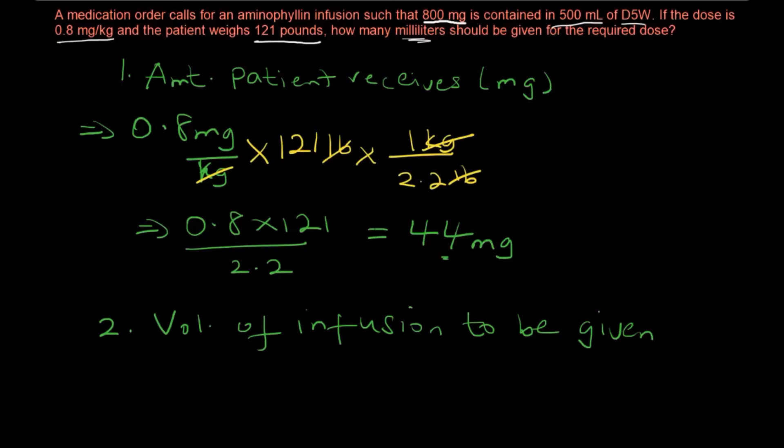The way we do that is to make use of the given information. We're given a quantity in the volume which gives us a concentration. Using this as a ratio, we can set up a proportion to tell us how much volume will give us the 44 milligrams. That's what we're going to do next.